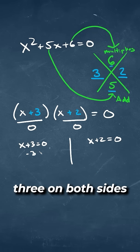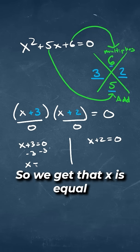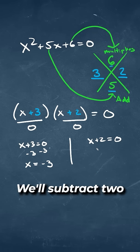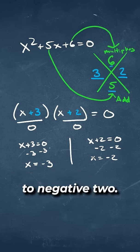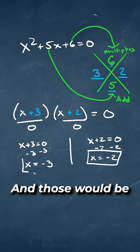We subtract 3 on both sides for this one, so we get that x is equal to negative 3. We'll subtract 2 on this one on both sides to get x is equal to negative 2, and those would be our two answers.